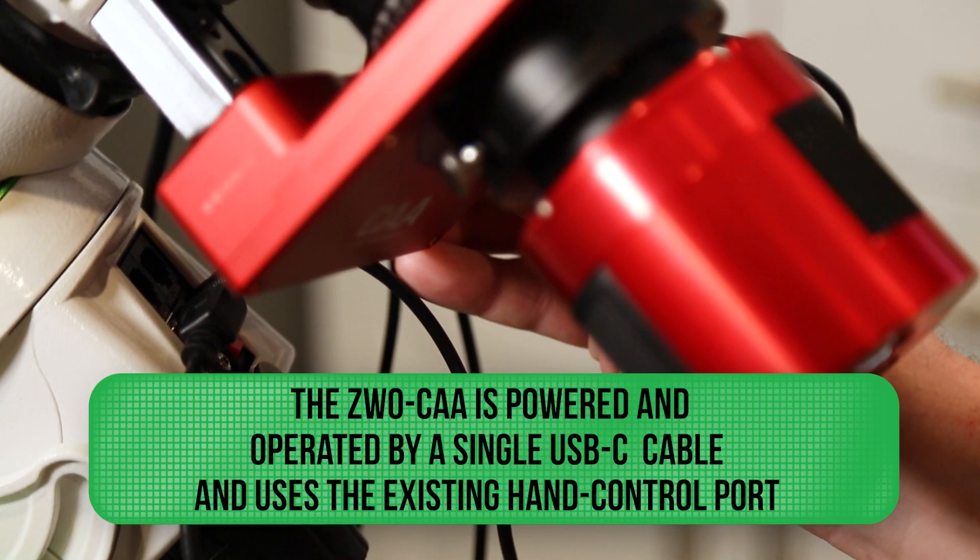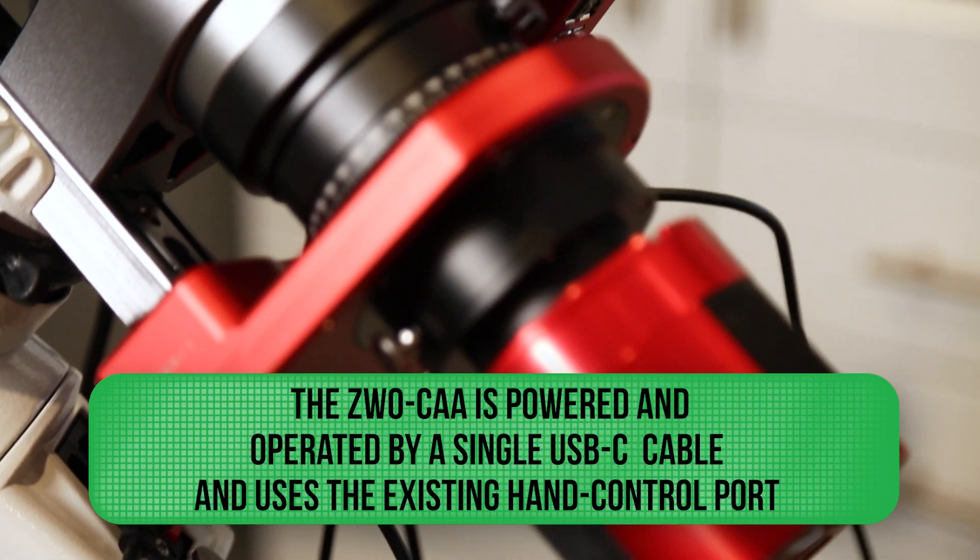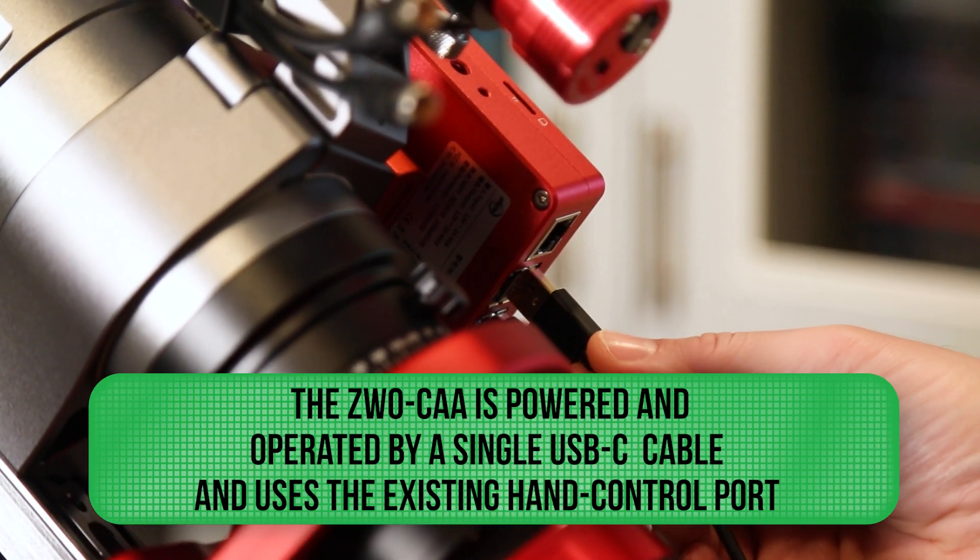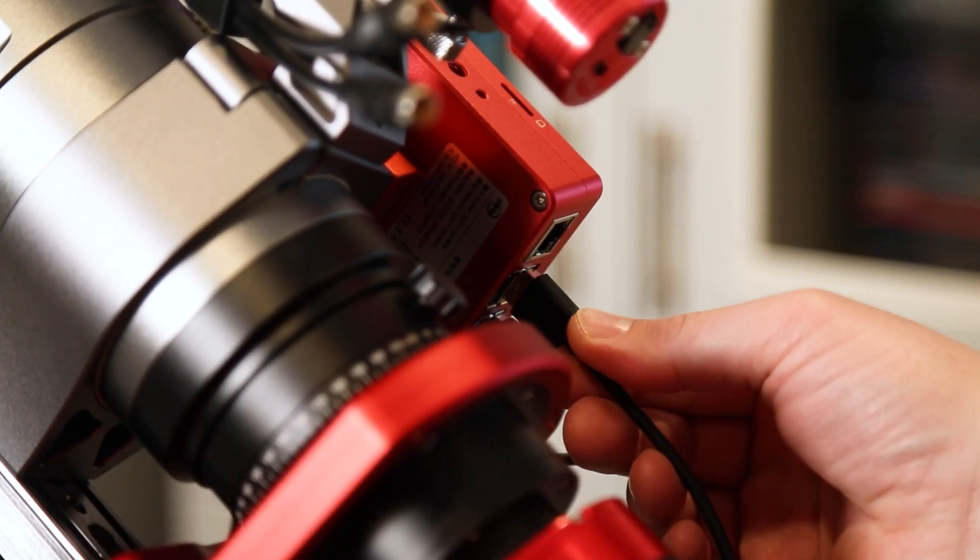It's powered and operated by a single USB-C cable. It also has a hand control port, which uses the existing EAF hand controller from ZWO. Now let's take a look at how we connect the CAA to my SpaceCat 51.